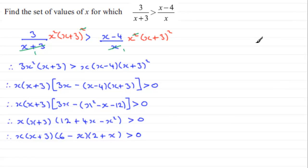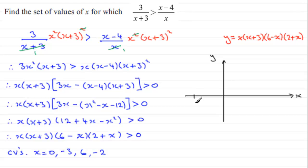If I was to draw the graph of y equals the left hand side here, we've got y equals x times x plus 3 multiplied by 6 minus x multiplied by 2 plus x. This is going to cross the x axis at 4 points, we'll call those points the critical values. Those points would be x equals 0, x equals minus 3, 6, and minus 2. When it comes to sketching our graph, our critical values are at minus 3, minus 2, 0, and 6.